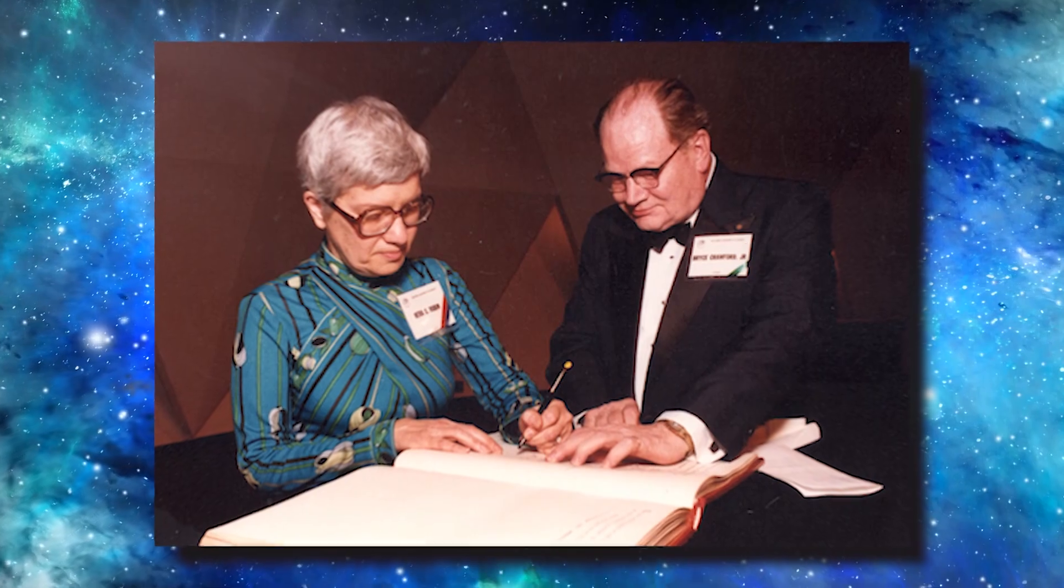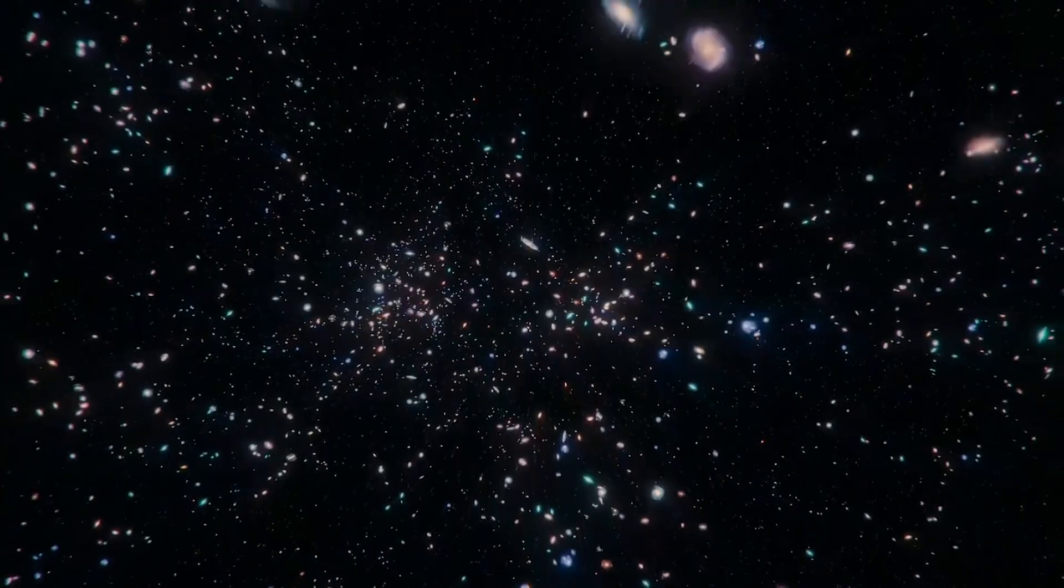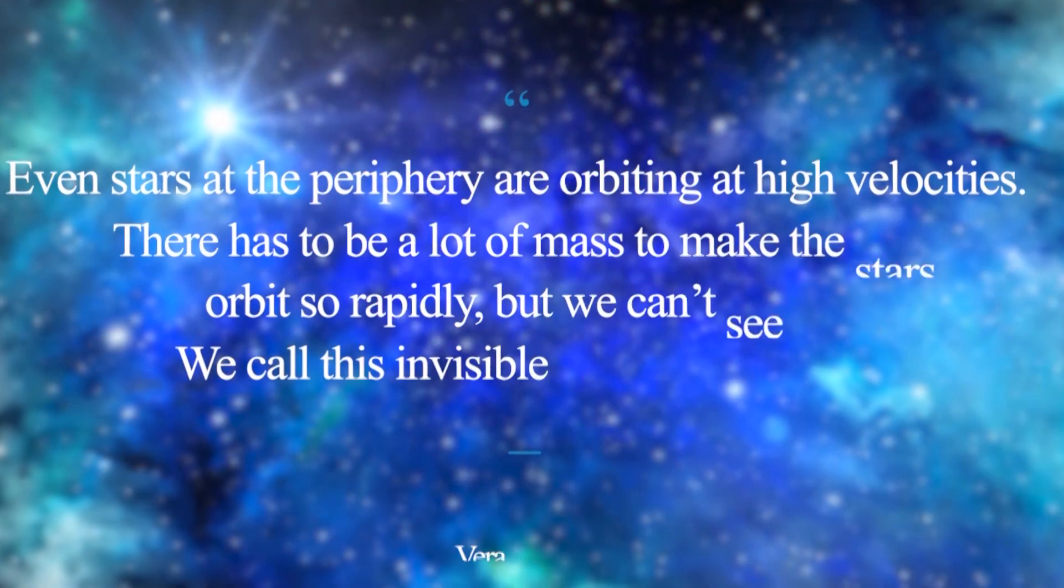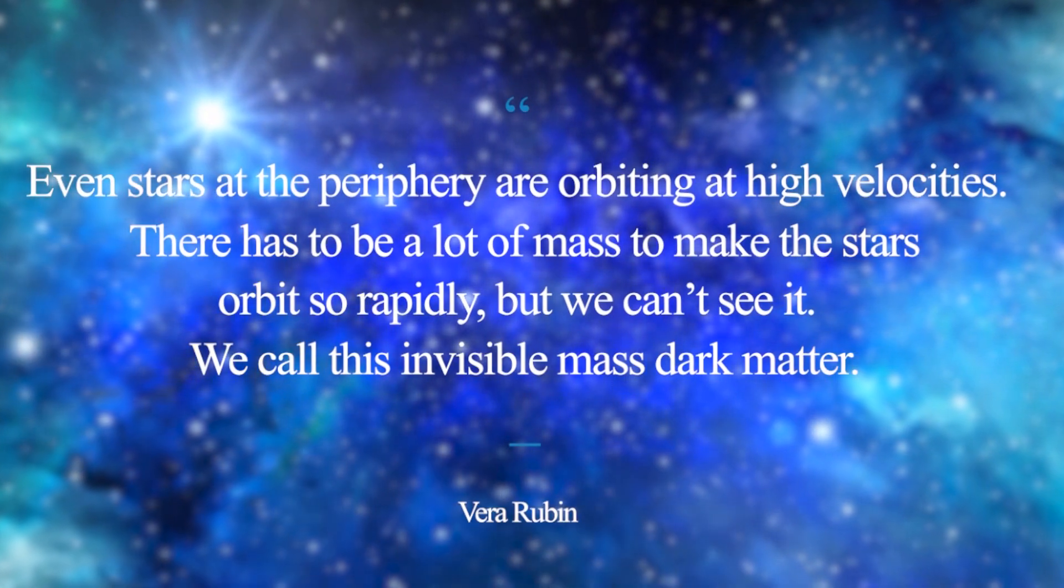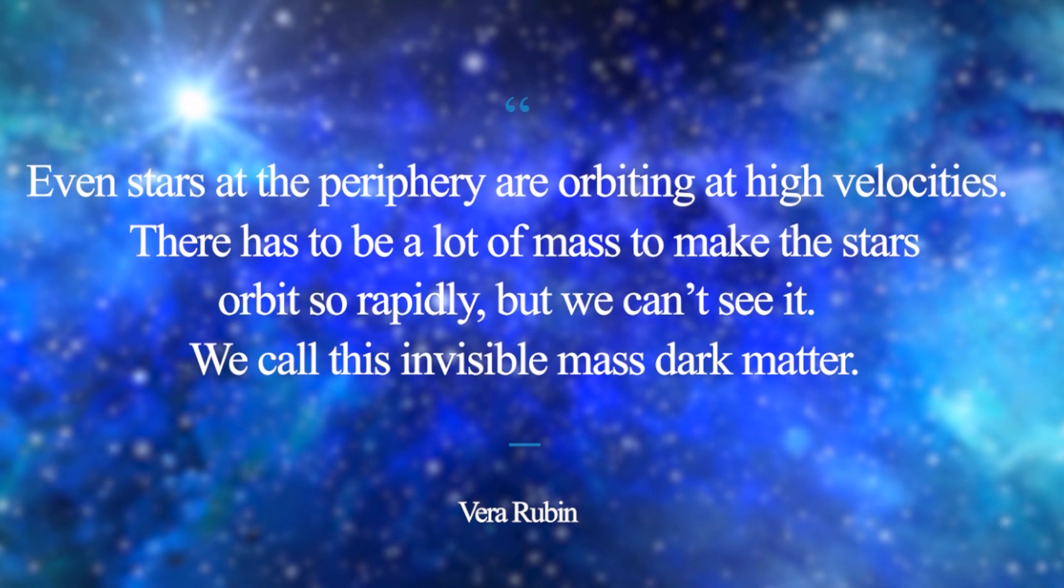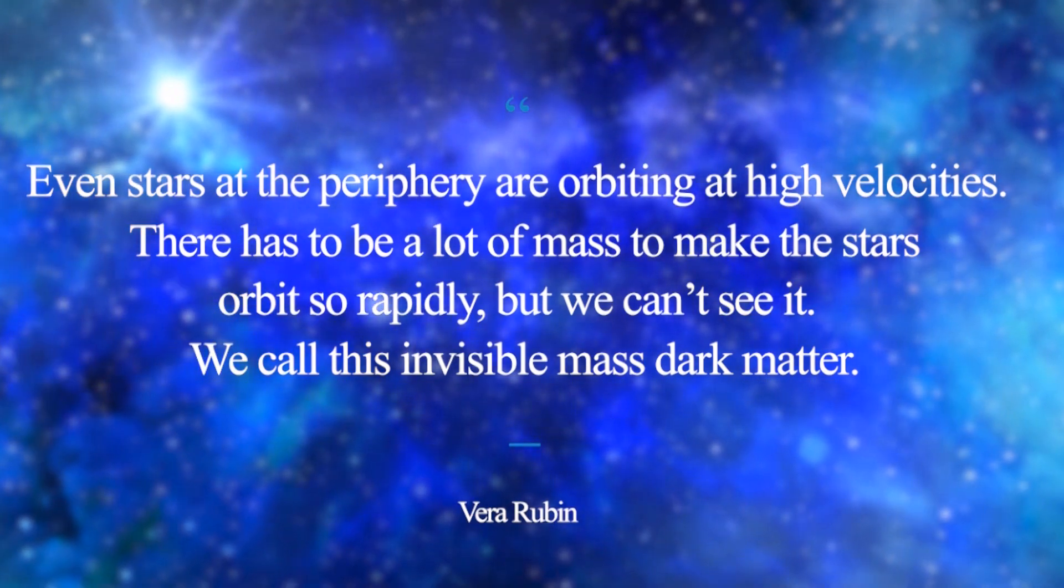Rubin and Ford had found more evidence that some invisible form of matter is apparently holding the universe together. Rubin once explained in an interview, even stars at the periphery are orbiting at high velocities. There has to be a lot of mass to make the stars orbit so rapidly but we can't see it. We call this invisible mass dark matter.